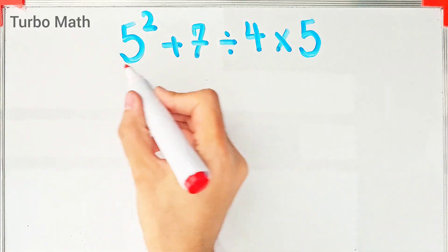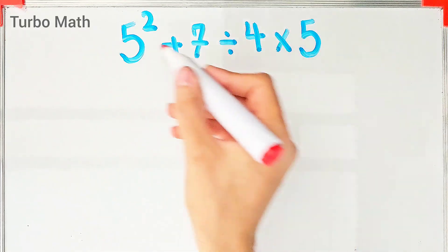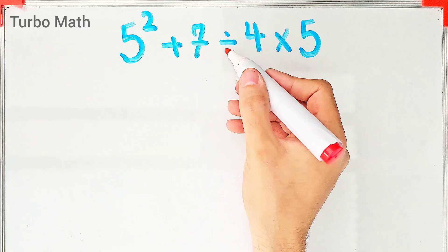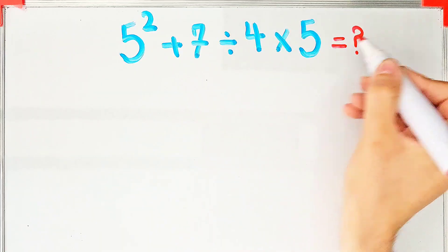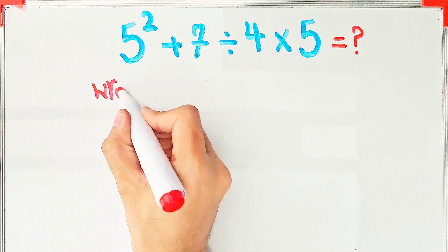What is the value of this expression? Hi friends and welcome to Turbo Math Channel. We have 5² + 7 ÷ 4 × 5. In the wrong way of solving this question, some